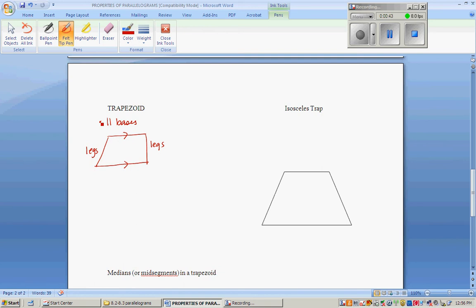An isosceles trapezoid though is a little bit special. It has, of course, parallel bases plus some other information. It needs to have congruent legs, much like an isosceles triangle.